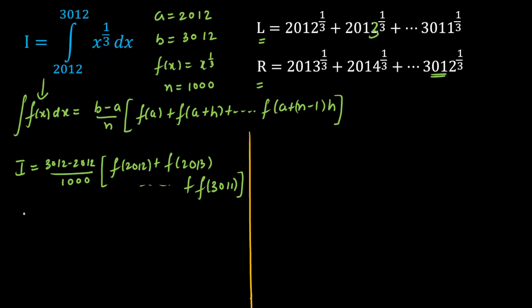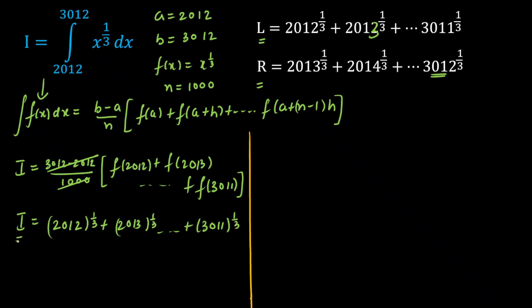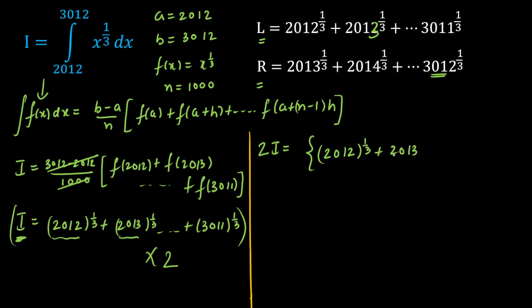The 1000 in the numerator and denominator cancel out. So we have: I equals the cube root of 2012 plus the cube root of 2013 and so on, up to the cube root of 3011. Now in order to compare I with L and R, I am going to multiply both sides by 2. So 2I equals 2 times this series — every number is repeated twice — which I can write as two separate series: the cube roots from 2012 to 3011.